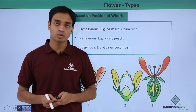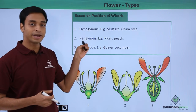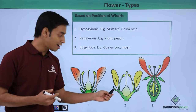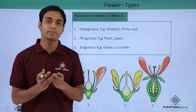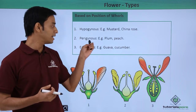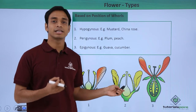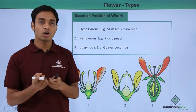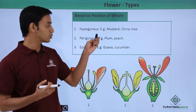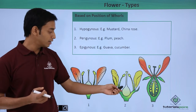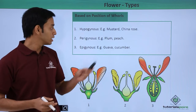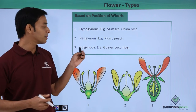This type is known as the hypogynous flower; examples are mustard and China rose. The second type is known as perigynous flowers. Here the ovary is not superior — the ovary and all other floral parts are at almost the same level. The ovary in this case is referred to as semi-inferior, sub-inferior, or half inferior ovary, since it lies along with all the other floral parts. Examples are plum and peach.